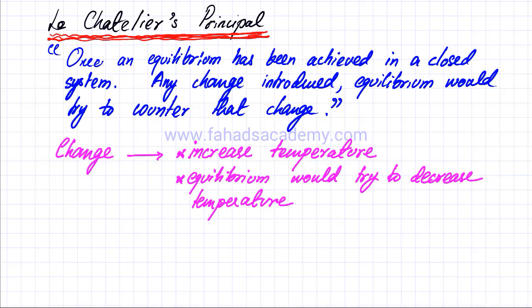We can do the opposite as well. What we can do is try to decrease temperature. Then if we try to decrease temperature, the equilibrium is going to counter that — it's going to try and increase temperature.